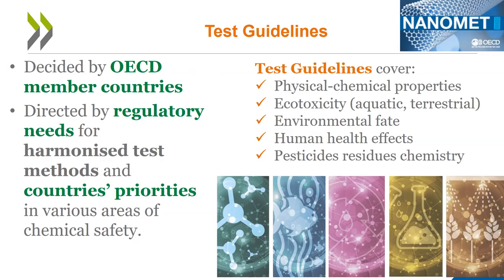Test guidelines are a collection of the most relevant internationally agreed test methods used by governments, industry, and independent laboratories to determine the safety of chemicals and chemical preparations, including pesticides and industrial chemicals. They are triggered by a regulatory need, by a data requirement. They are meant to contribute to international harmonization of hazard and risk assessment. They address a health or an environmental concern. Test guidelines can be divided into different categories to address different endpoints, such as physicochemical endpoints, ecotox, environmental fate, human health effects, and pesticide residues chemistry. Today, there are more than 150 test guidelines, and they are regularly updated and replaced by new ones to reflect the latest scientific advances available.